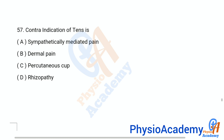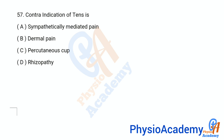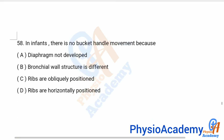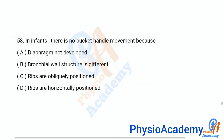Question 57: Contraindication of TENS is — Option A: sympathetically mediated pain. Option B: dermal pain. Option C: percutaneous cuff. Option D: rhizopathy. The correct answer is option C, percutaneous cuff.